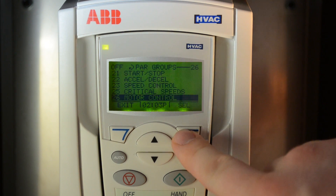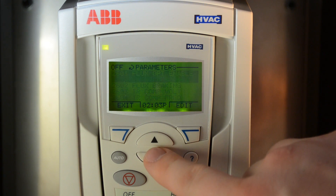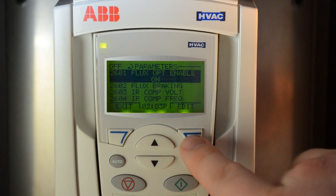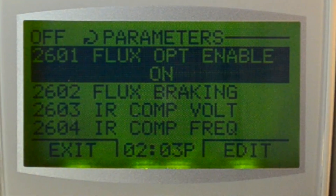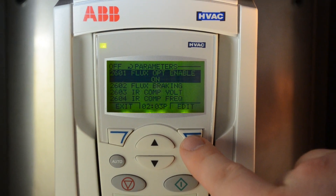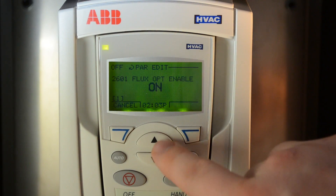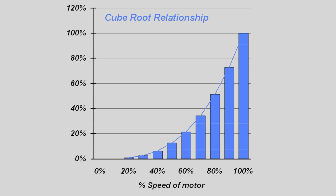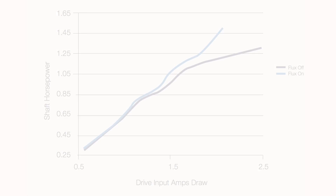Part of the foundation that made this VFD so successful was the flux optimization algorithm. With flux optimization, ABB has taken VFDs to new heights, making them far more efficient. VFDs are constantly being pushed to their efficiency limits, but with flux optimization, ABB has shattered those limits.